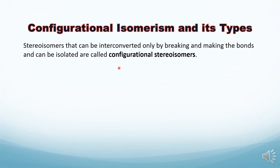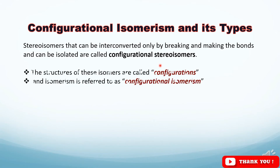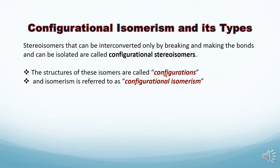These stereo isomers whose interconversion is possible only by breaking and making of bonds, and which can also be isolated, are called configurational stereo isomers. The structures of these isomers are called configurations, and therefore this isomerism is referred to as configurational isomerism.